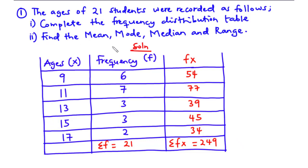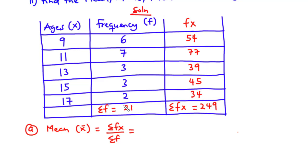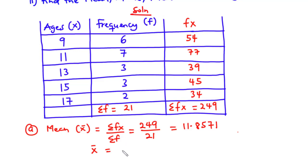Now let's find the mean. The mean is given by the formula: summation of fx divided by summation of f. We have summation of fx as 249 divided by summation of f which is 21. When you do the division, you get 11.8571. So the mean is equal to 11.86 to two decimal places.